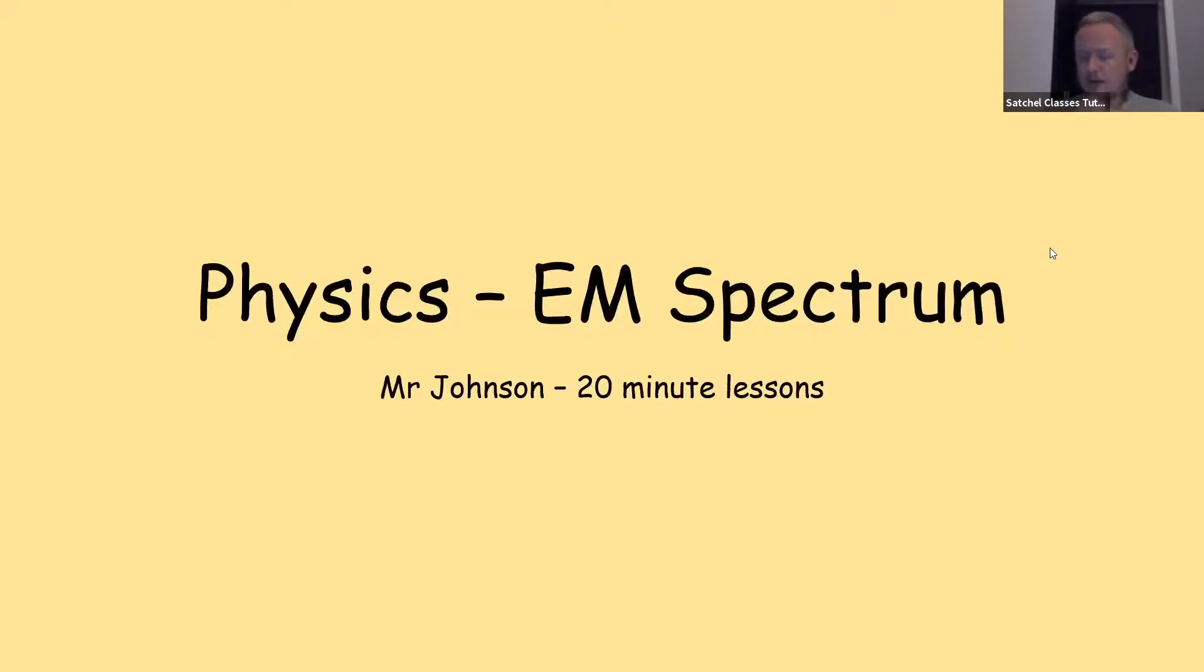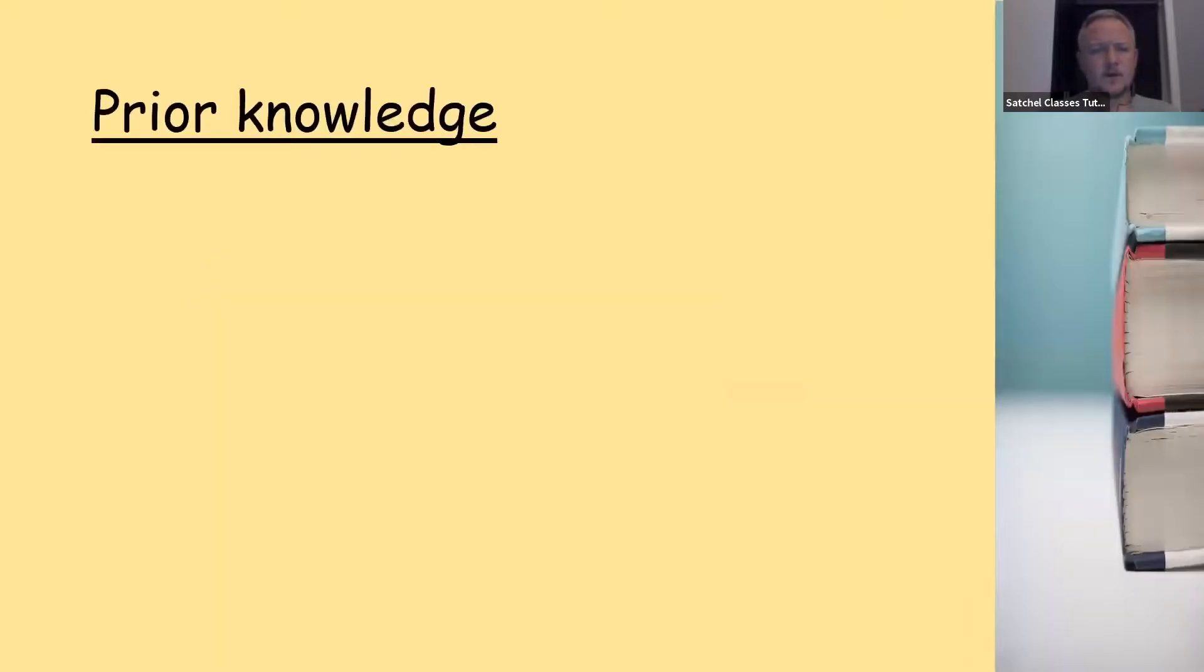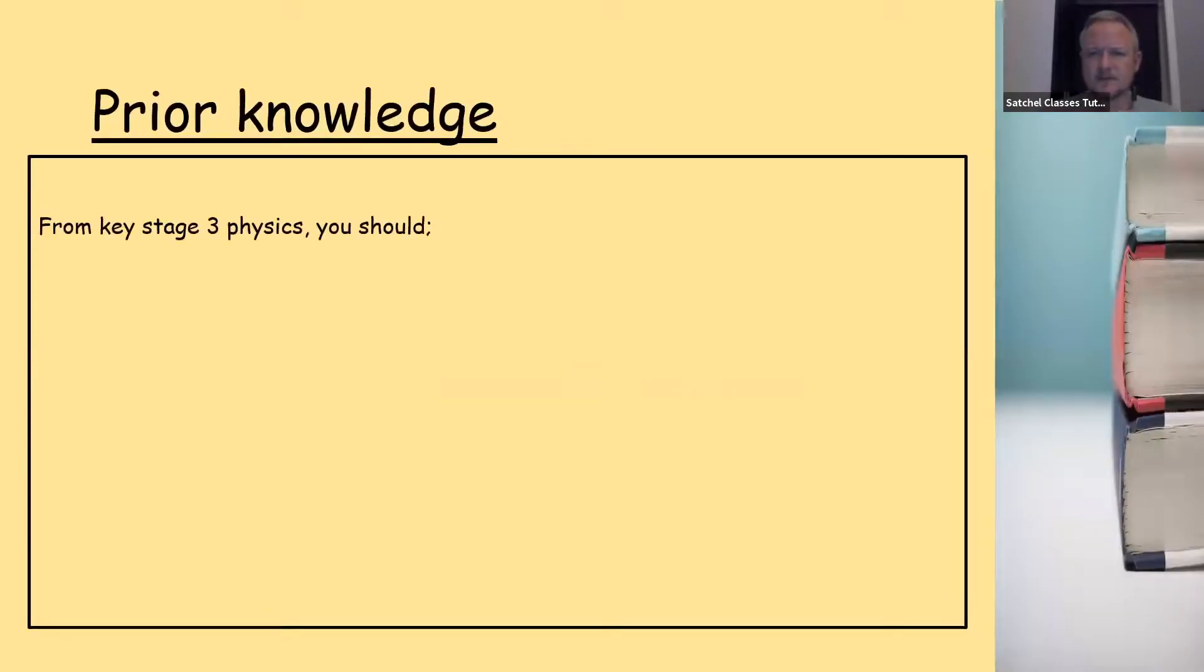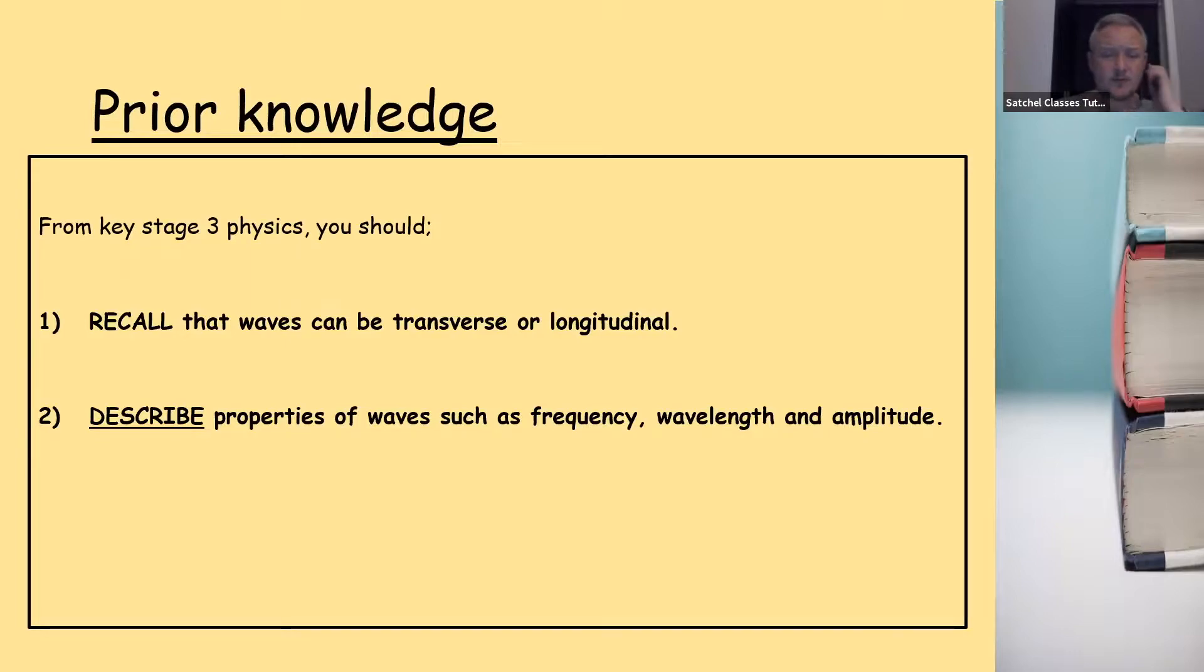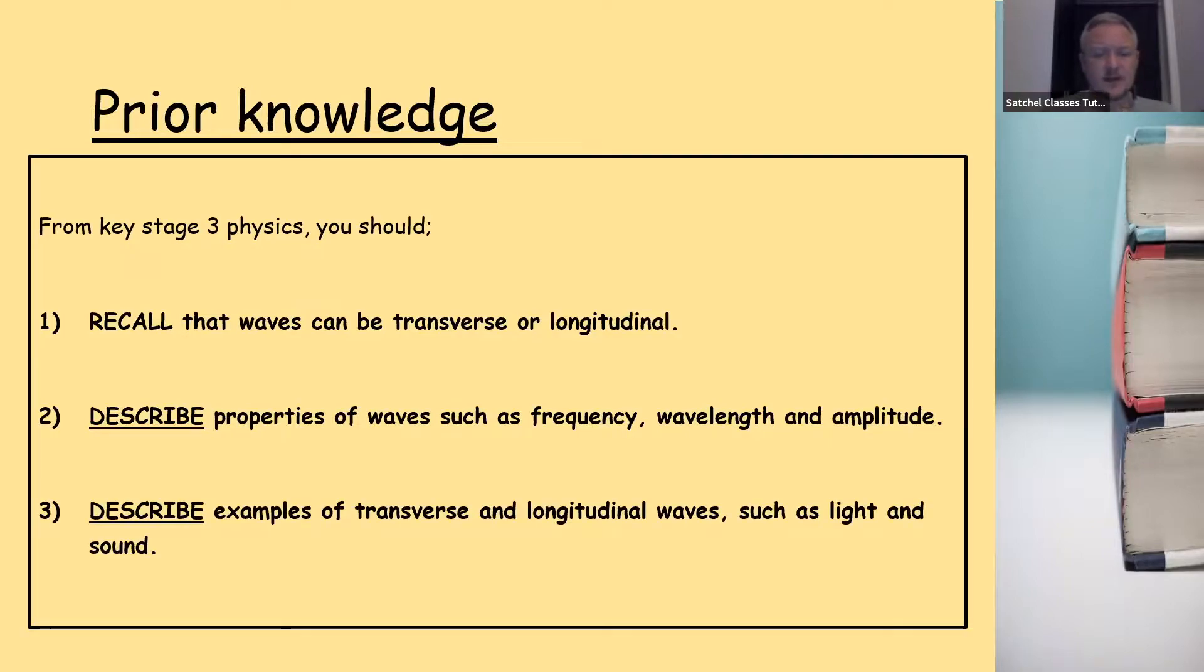This is about the EM or electromagnetic spectrum. Prior knowledge from Key Stage 3: you should be able to recall that waves can be transverse or longitudinal. You should also describe properties of waves such as frequency, wavelength and amplitude. Finally, you should be able to describe examples of transverse and longitudinal waves such as light and sound.